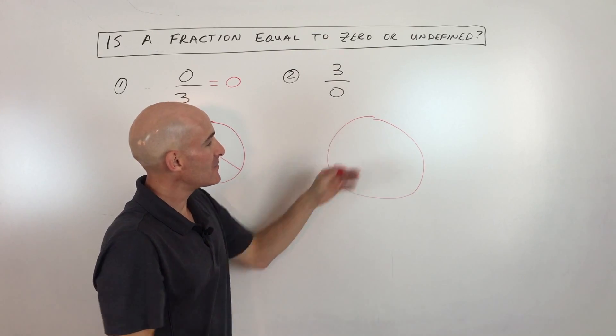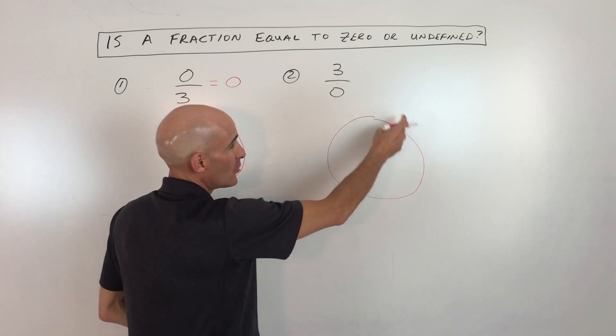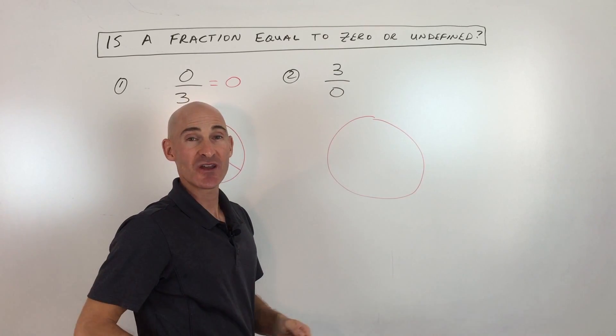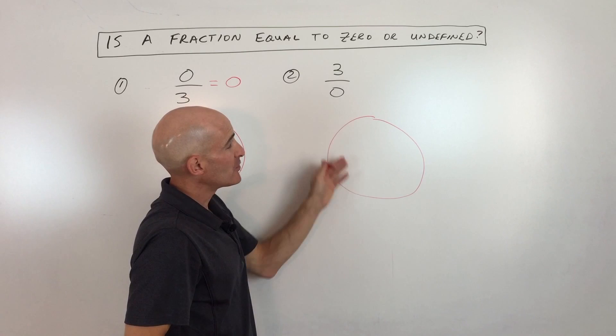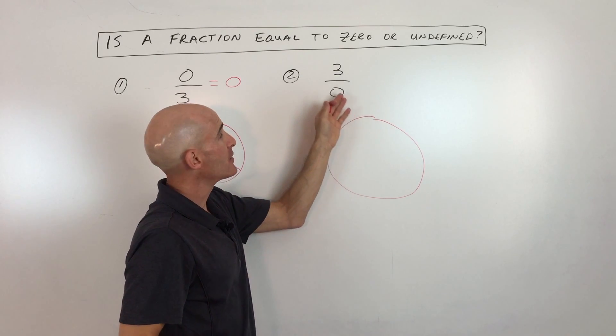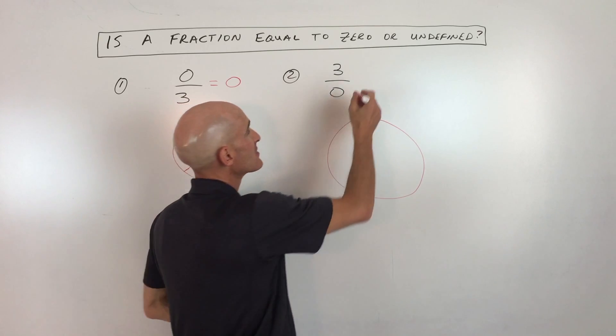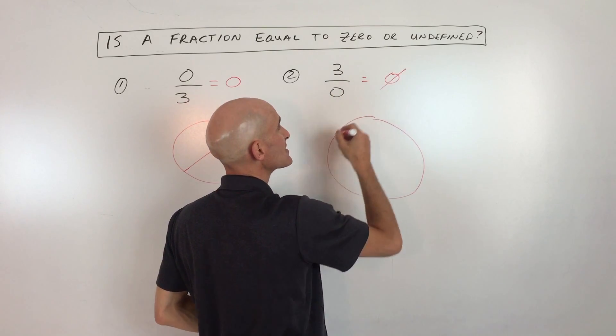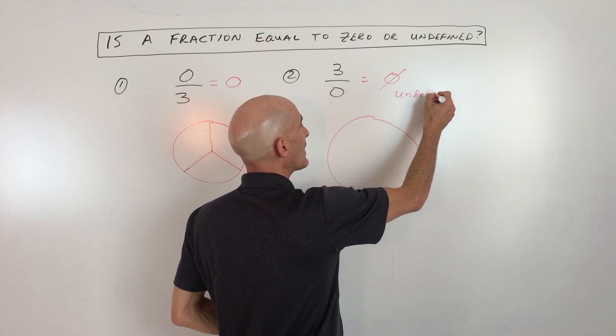So even if I don't cut this pizza at all, it's still one gigantic piece, won't you agree? So we can't really divide it into zeros. So that means that this is undefined. You can't divide it into zeros. This is undefined, sometimes written with this symbol here or you could write the word undefined.